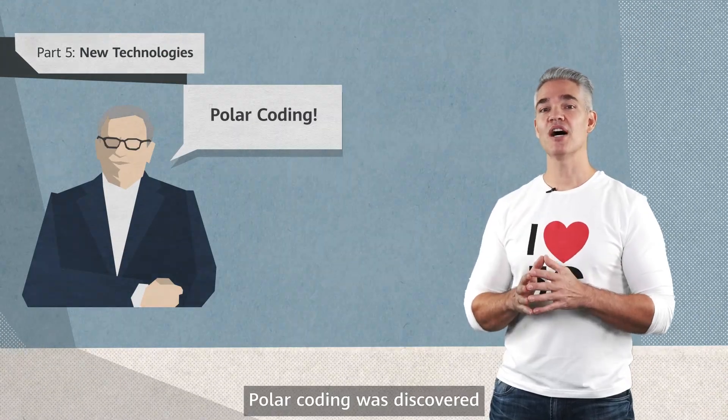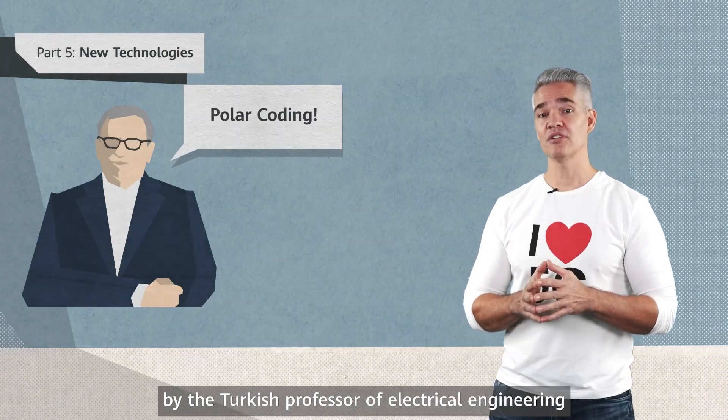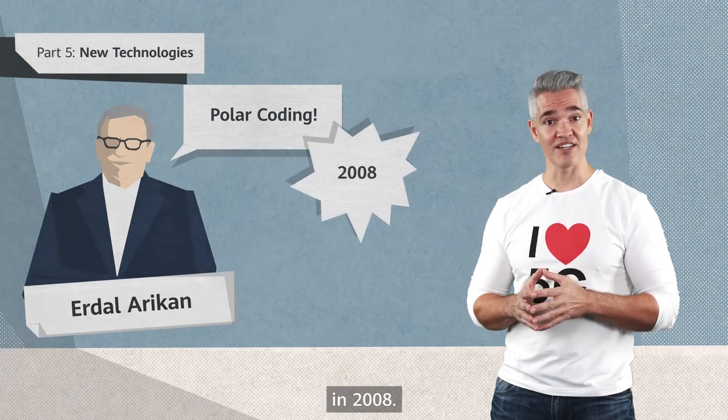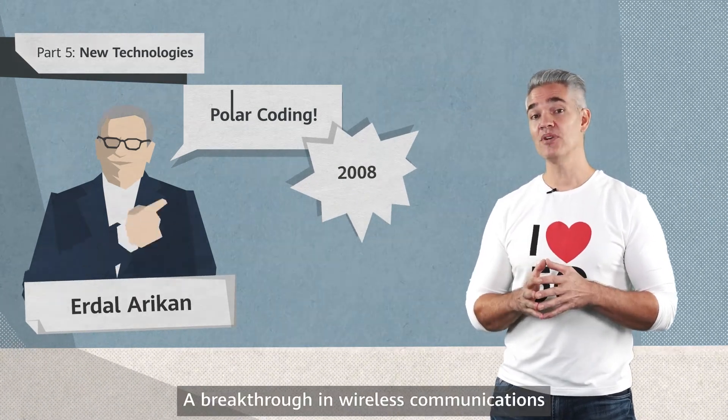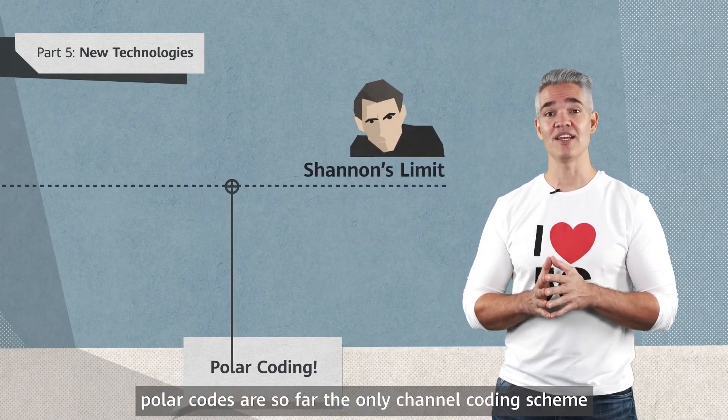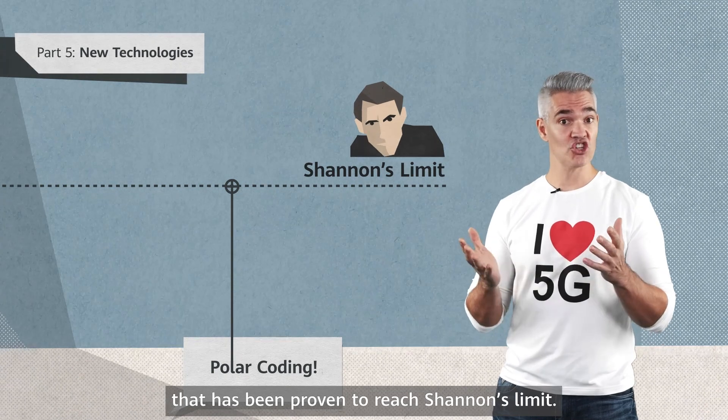Polar coding was discovered by the Turkish professor of electrical engineering, Erdal Arikan, in 2008. A breakthrough in wireless communications, polar codes are so far the only channel coding scheme that has been proven to reach Shannon's limit.